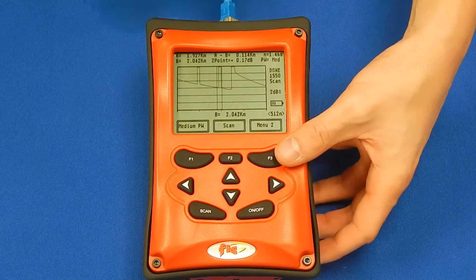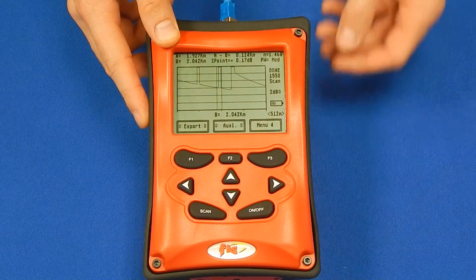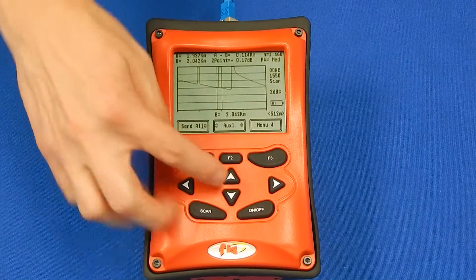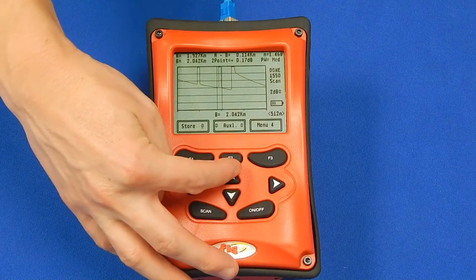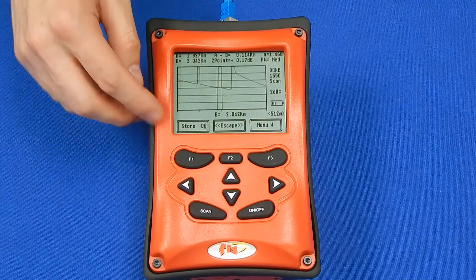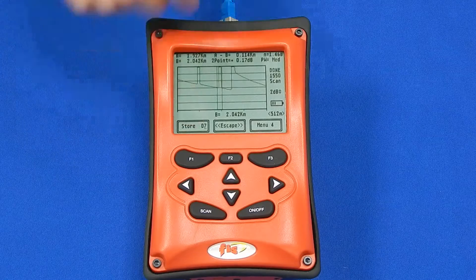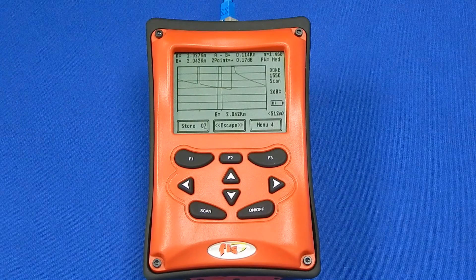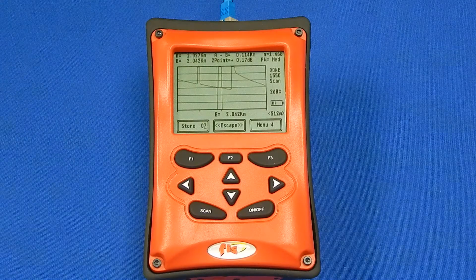To store the trace, go to menu four and press the F1 key for export. Use the arrow keys to select store and the next available number location will show. Press F1 again to store the trace and you will see the number advance to the next location and the file is now saved.